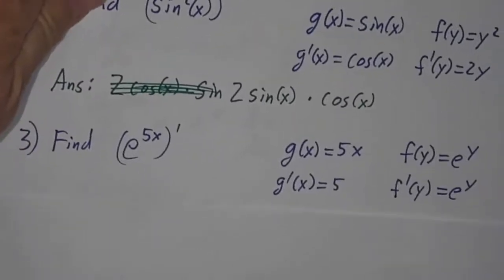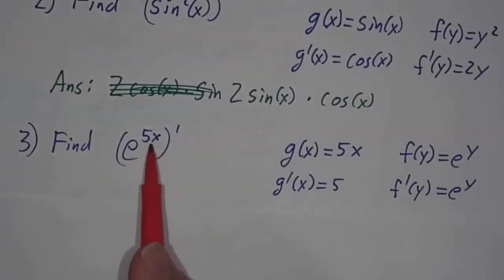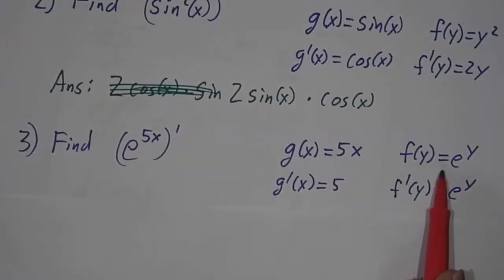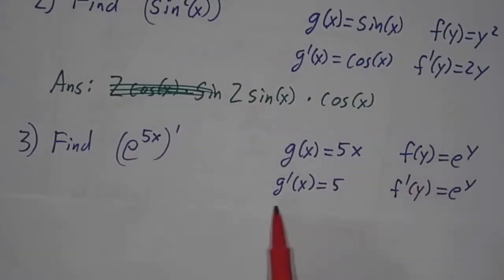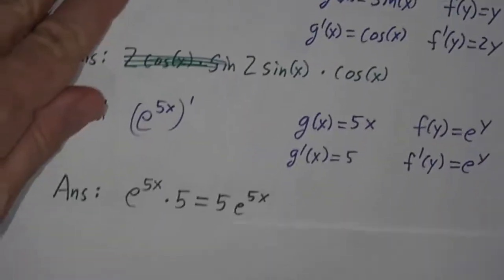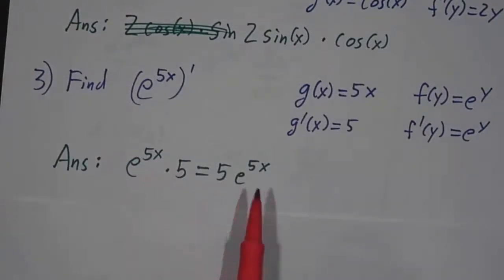If we want the derivative of e to the 5x, we say that's g of x = 5x, and then we exponentiate. f of that is e to the y. g prime is 5, f prime of y is e to the y, and we just get e to the 5x times 5, which we usually write as 5e to the 5x.